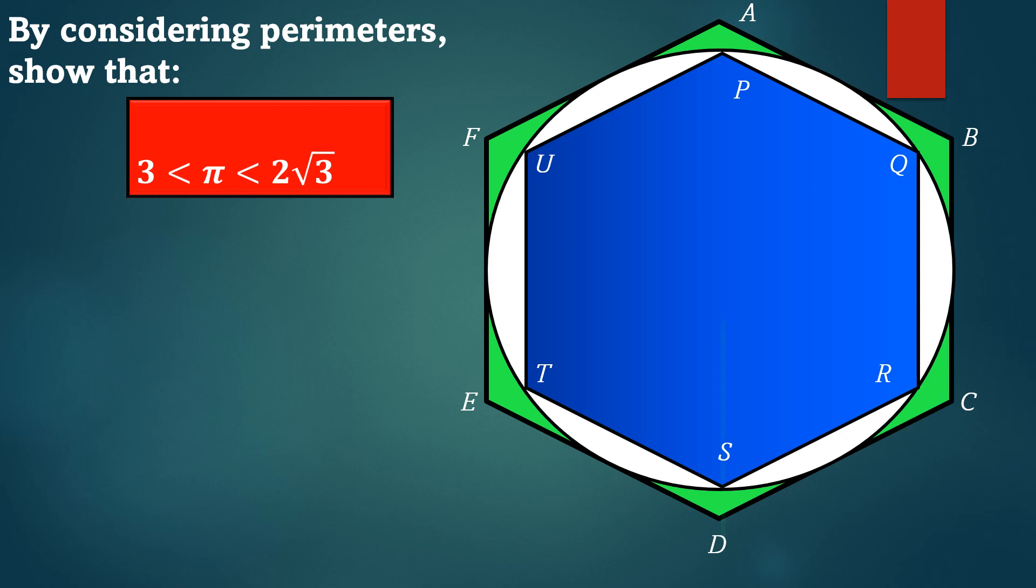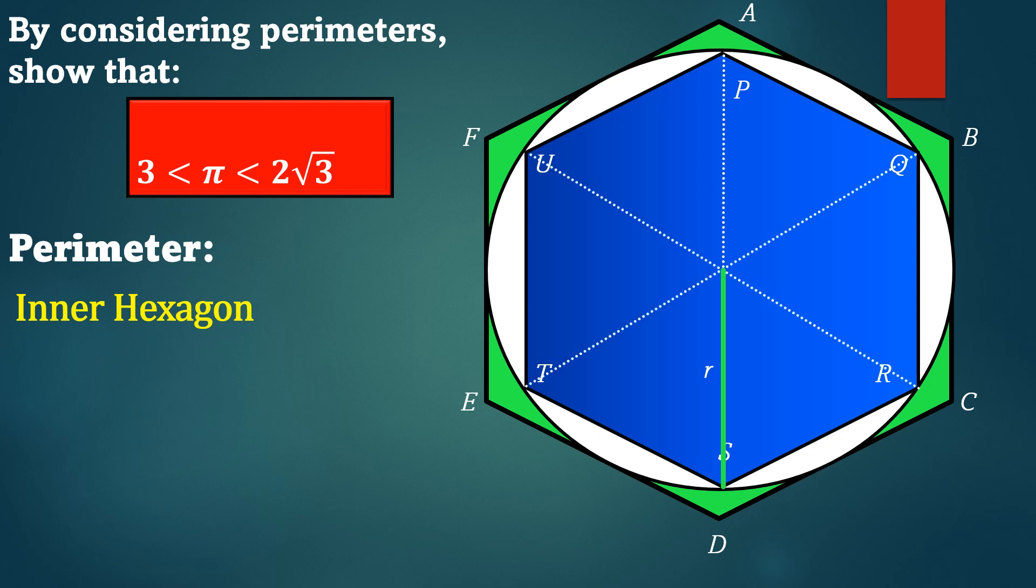Let's calculate the perimeter of the inner hexagon. We are given the radius of the circle is r centimeters. Focusing on the inner regular hexagon, it can be divided into six equilateral triangles.